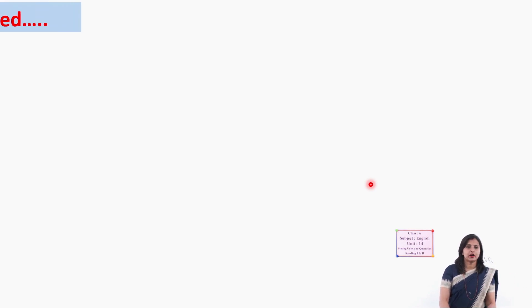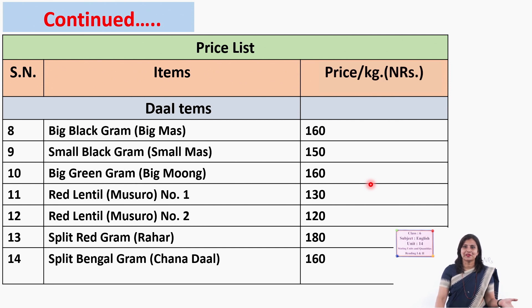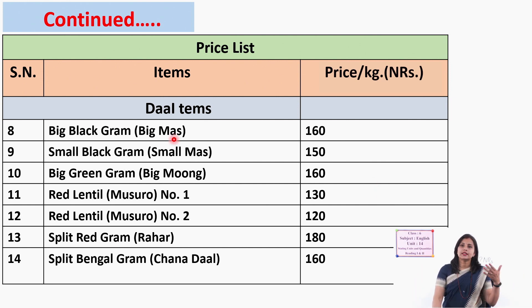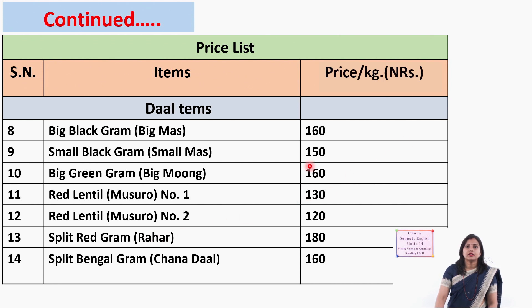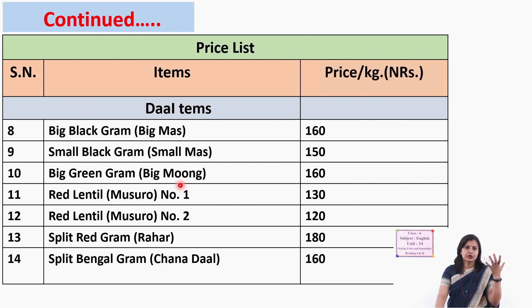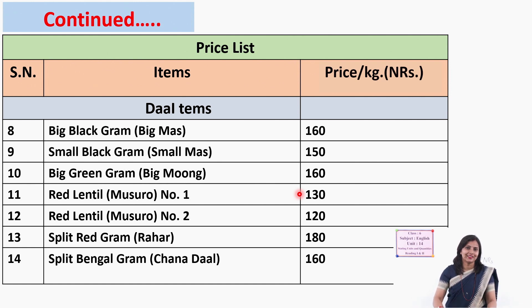That was about the rice items. Now let's move to the next part of the chart — the dal items. You cannot have rice only; you need to buy dal too. The same store, All in One Store, has different varieties of dal pulses with their prices listed. Once you have a quick look, tell me which dal your mom cooks at home.